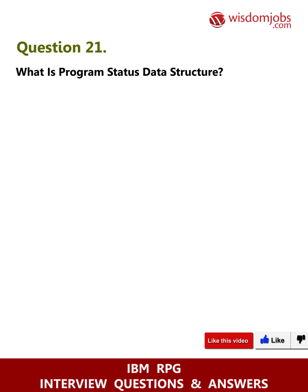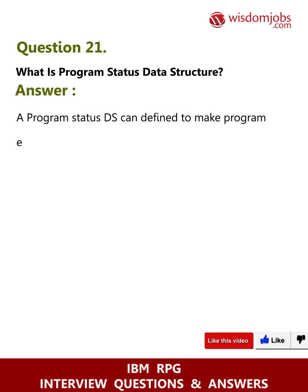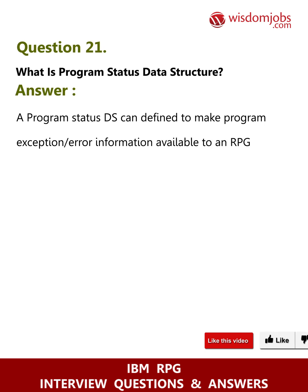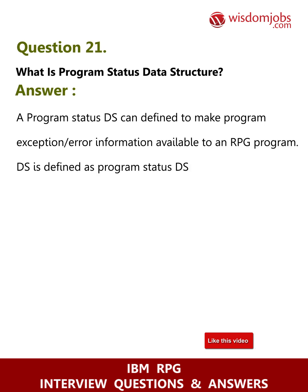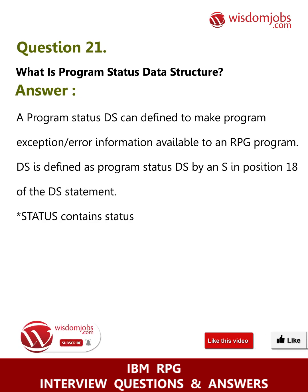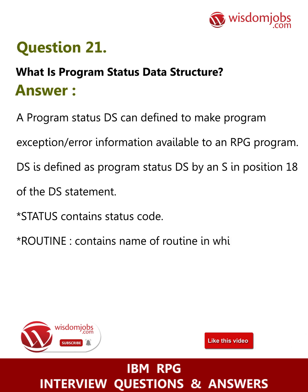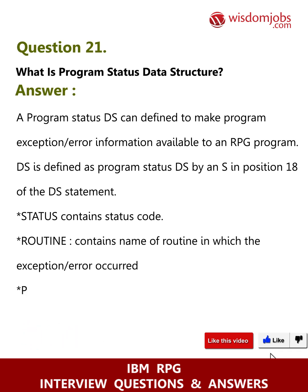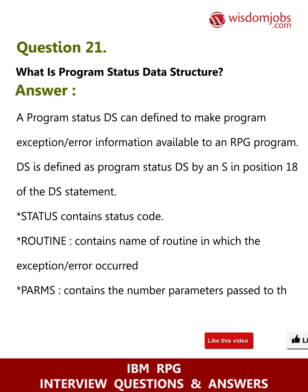Question 21: What is Program Status Data Structure? Answer: A Program Status DS can be defined to make program exception/error information available to an RPG program. DS is defined as Program Status DS by *NS in position 18 of the DS statement. *STATUS contains the status code. *ROUTINE contains the name of the routine in which the exception/error occurred. *PARMS contains the number of parameters passed to this program from the calling program.